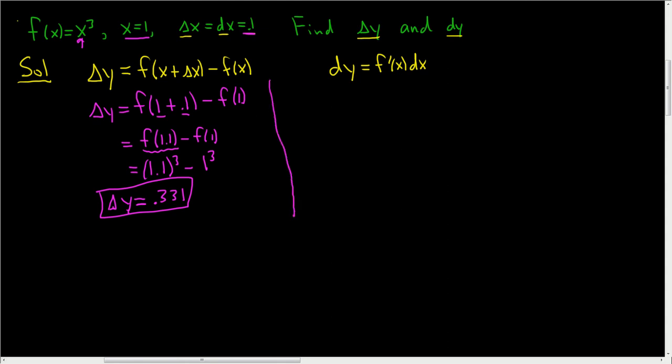Okay, let's do the other one. So dy is equal to f prime of x. Well, the derivative of x cubed is 3x squared, and then we have the dx. This is equal to 3 times 1 squared, and dx is 0.1, so times 0.1. This is equal to 0.300.